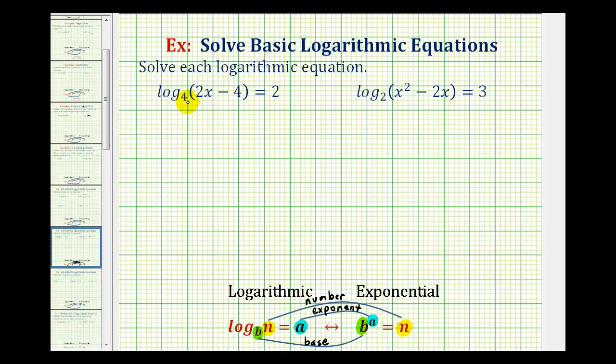Our base is four, our exponent is two, and the number is equal to the expression 2x minus 4. So our exponential equation would be four raised to the second must equal 2x minus 4.